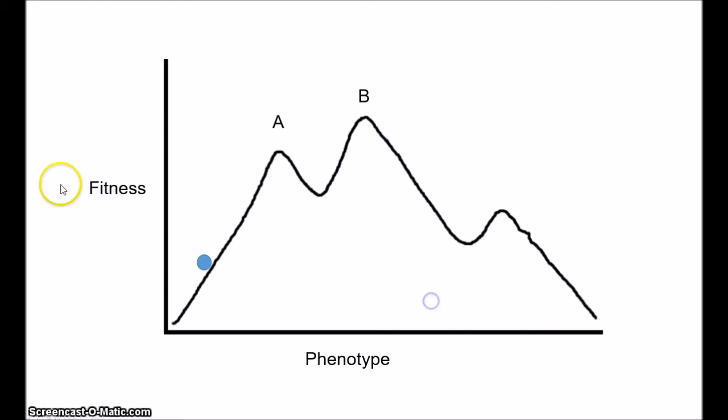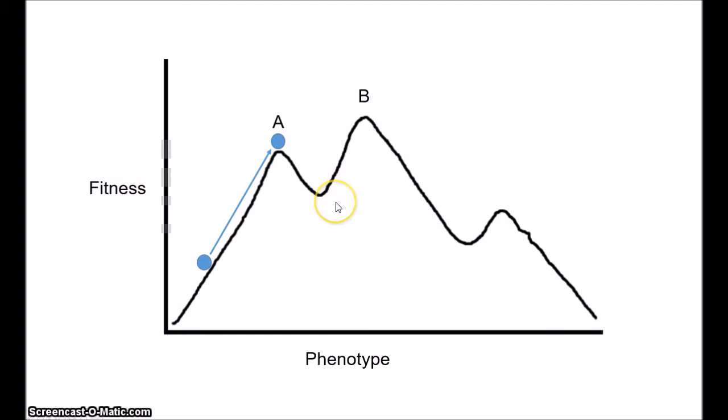Natural selection can never drive a population downward — it only selects the fittest. As a little aside, it may be worth checking out my video on fitness and natural selection, because in that video we raise some problems about the notion of fitness. It may be worth asking whether we can actually define fitness in a way that makes sense of this adaptive landscape metaphor.